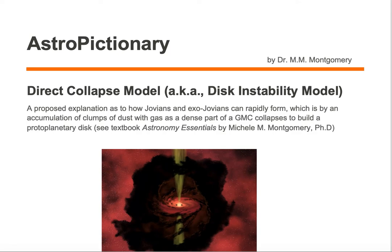The direct collapse model, also known as the disk instability model, is a proposed explanation as to how Jovians and exo-Jovians can rapidly form, by an accumulation of clumps of dust with gas as a dense part of a GMC collapses to build a protoplanetary disk.